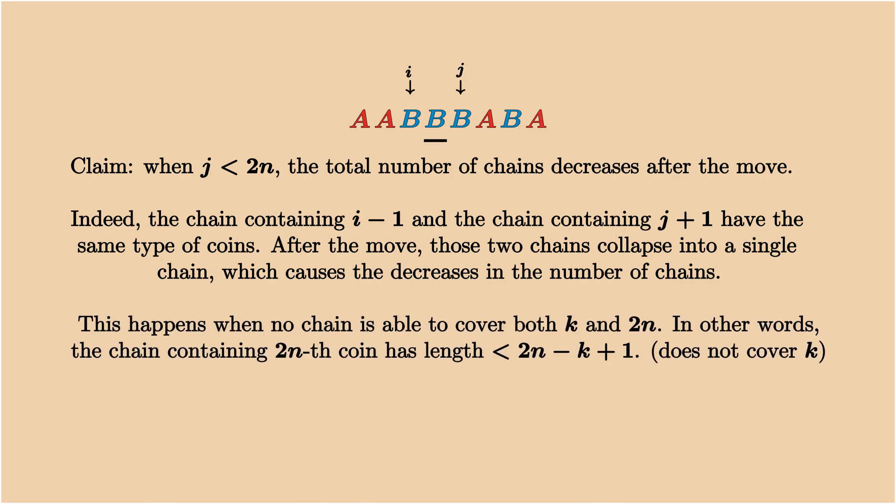Now let me interpret this condition in a slightly different way. What it is essentially saying is that no chain is able to cover both the kth coin and the last coin. In other words, this happens when the chain containing the last coin has length smaller than 2n-k+1.